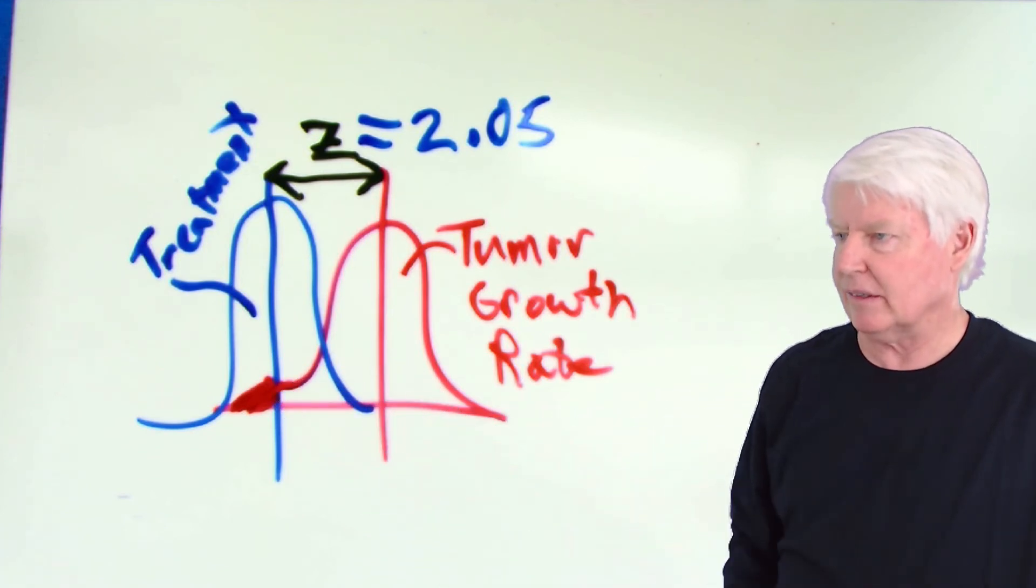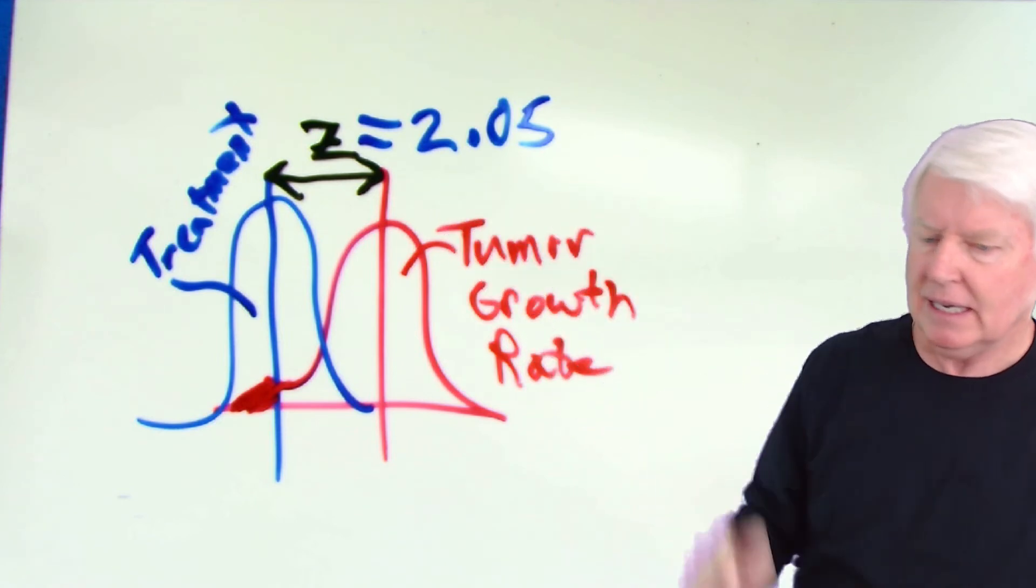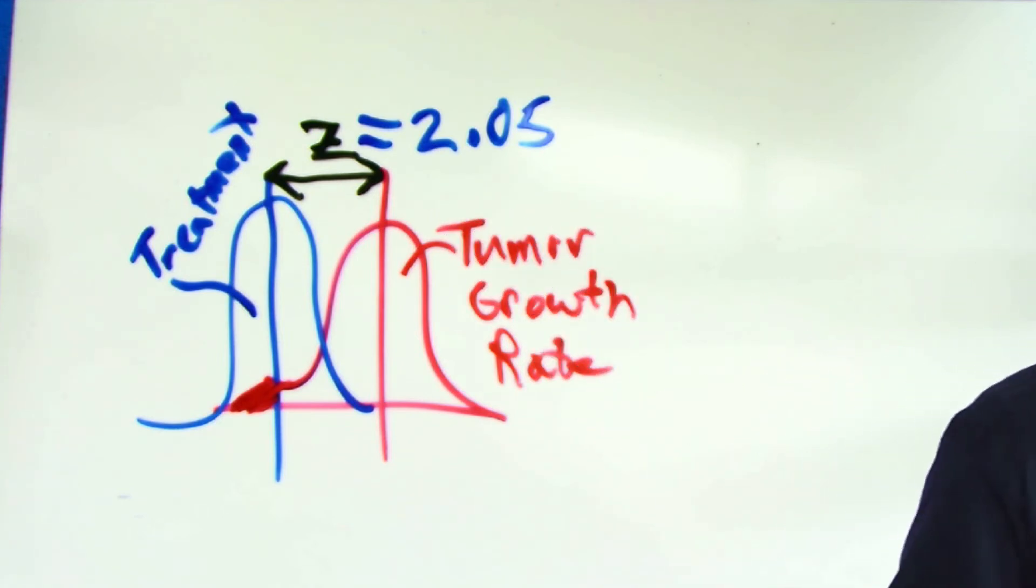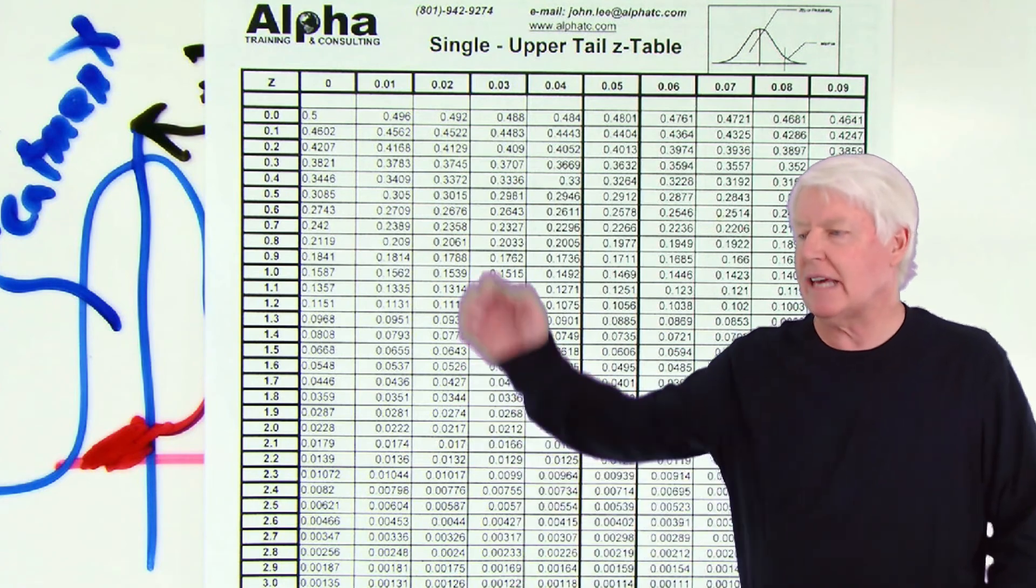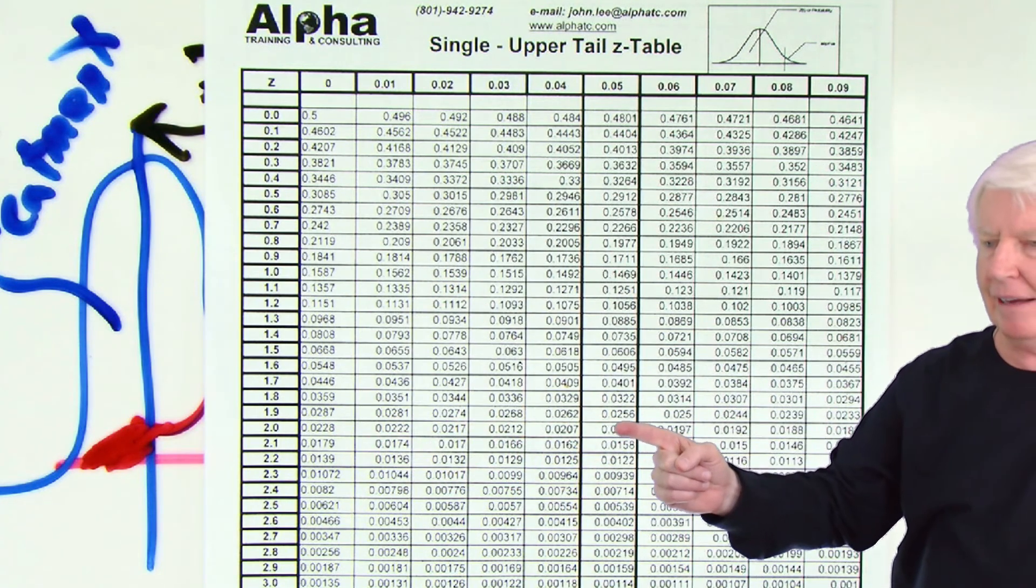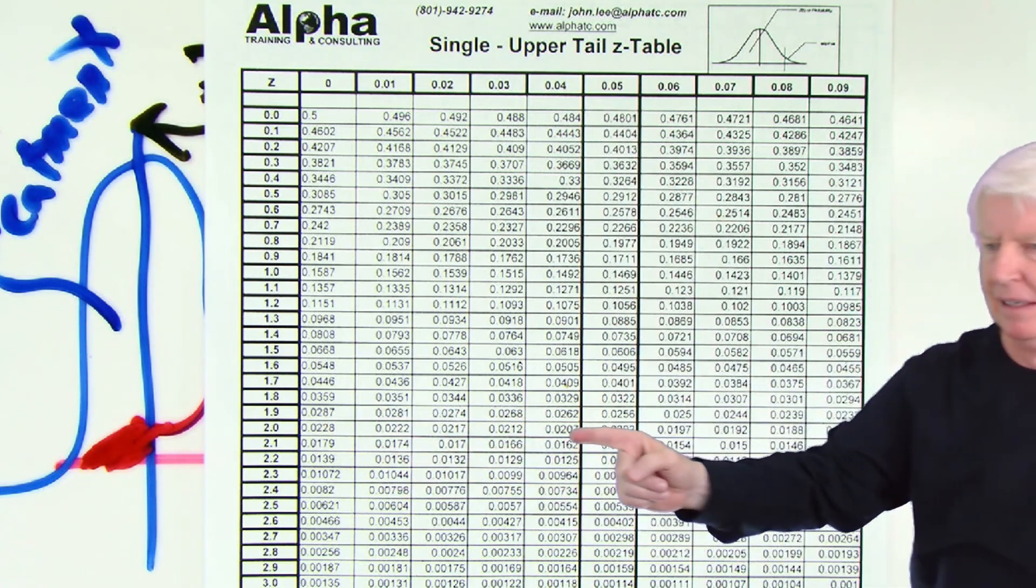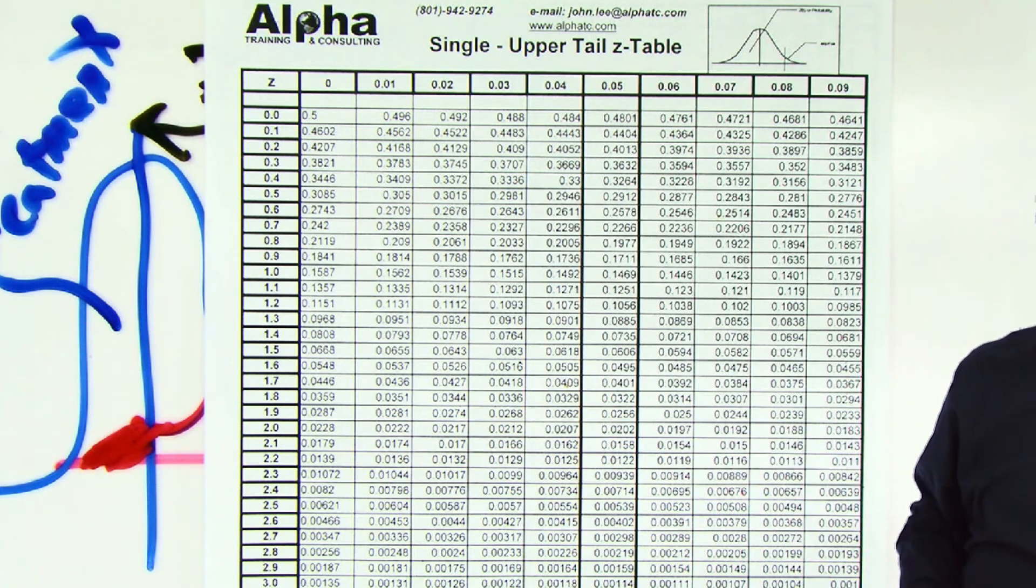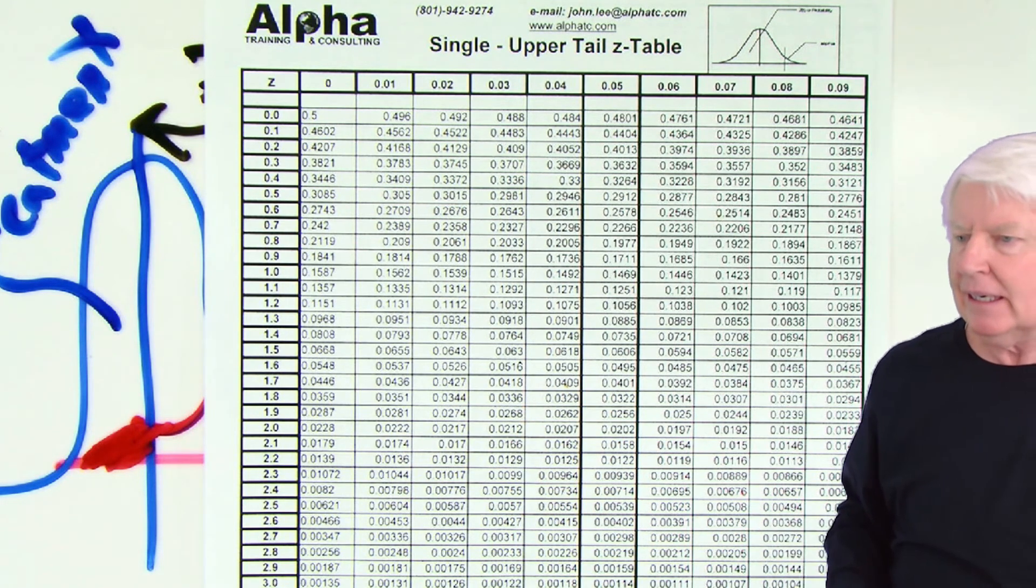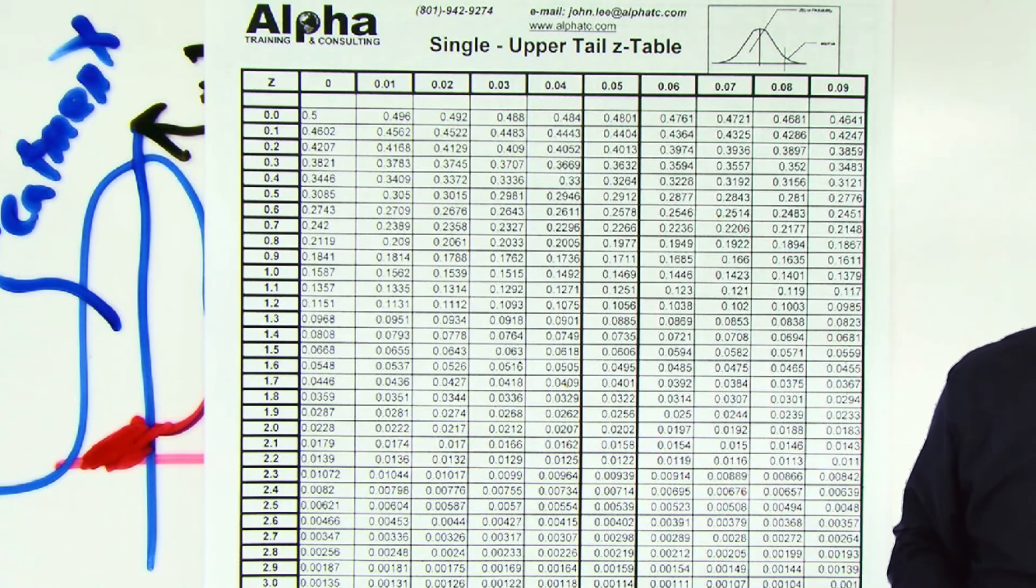Then all we have to do is go to the Z table, look up 2.05, and find out what that is. What that overlap is. So let's go to the Z table and see what that overlap is. And then I'll discuss that further. So here we are at the Z table. We go down to 2.05. Notice that's the 5 column there, 2.05. And it's 0.0202. So let's go back and put that on our drawing.